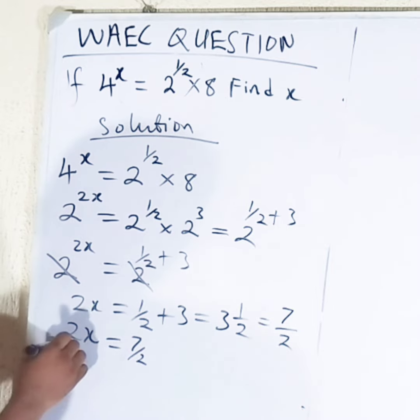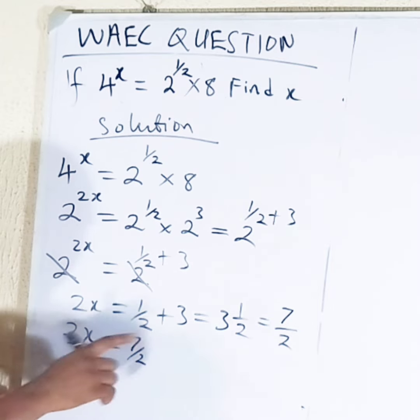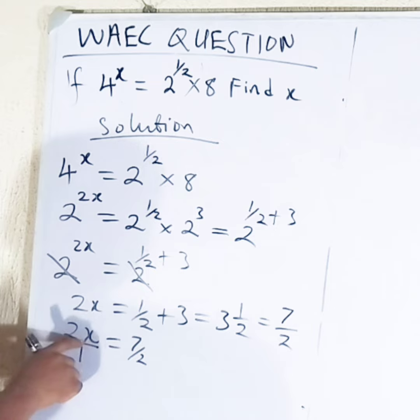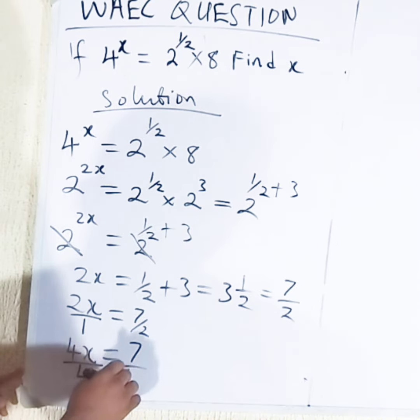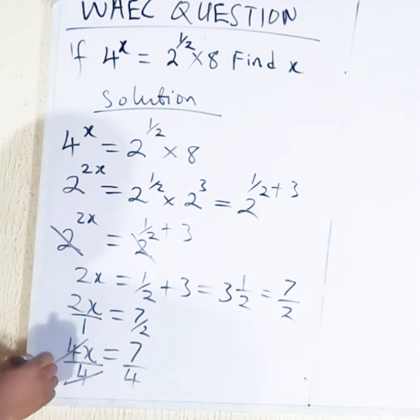Then we can put here over 1 and we can cross multiply. 2 times 2x will give you 4x. 1 times 7 will give you 7. Divide both sides by 4. 2 times 7 over 4, this 4 will cancel this 4.